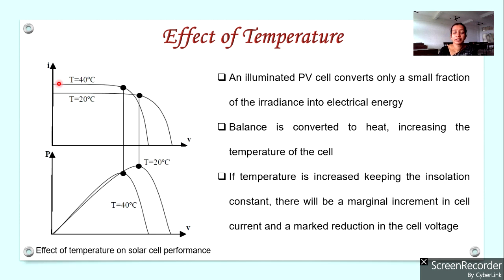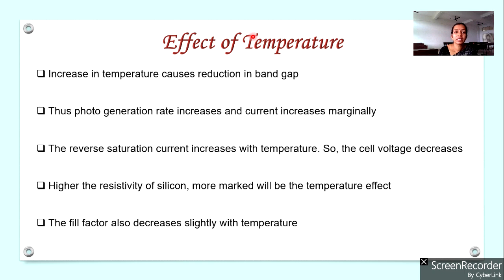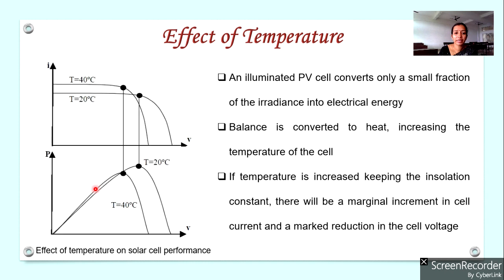At that condition, the diode will be reverse biased and the reverse saturation current of the diode increases. Reverse saturation current is due to minority carriers, and minority carriers are thermally generated — they are generated due to temperature. So with increase in temperature, more and more minority carriers are generated and the reverse saturation current increases. Due to this, voltage across the terminals of the solar cell decreases considerably.